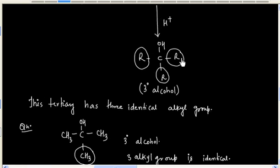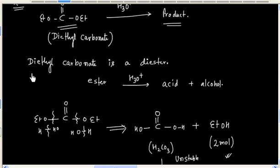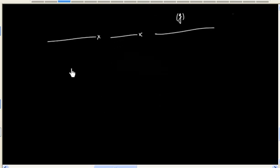This kind of alcohol is called carbinol. So carbinol is a tertiary alcohol with same kind of alkyl groups. So carbinol is a tertiary alcohol with same alkyl groups. So in this lecture, we discussed about reactions of diethyl carbonate.